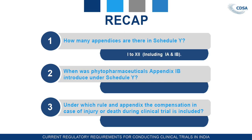There are 12 appendices including appendix 1A and 1B. The next question: when was the phytopharmaceutical drug appendix 1B introduced under Schedule Y? It was introduced vide GSR 918 on 30th November 2015.